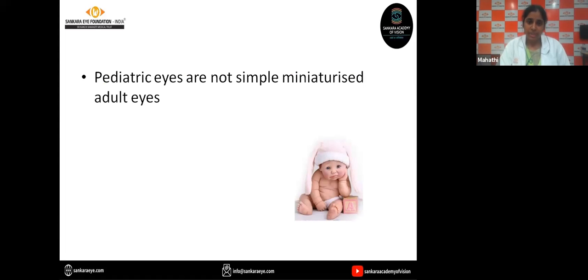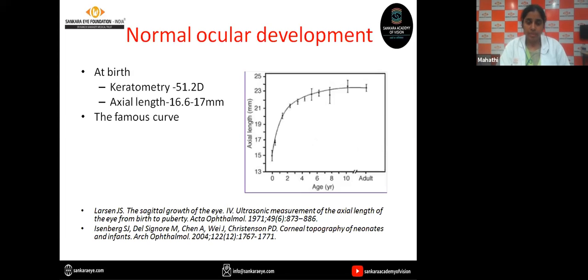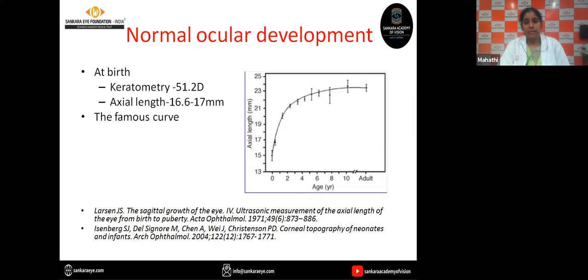Pediatric eyes are not like adult eyes. If you see the normal ophthalmology, at birth the corneas are steep. At birth the keratometry readings are around 51.2 diopters and the average axial length varies between 16.6 and 17.0 mm. This is the famous Gordon curve, which shows the relationship between age and axial length. The maximum growth of the eye occurs in the first two years of age — around 90 percent of the growth — and the remaining 10 percent occurs after two years.